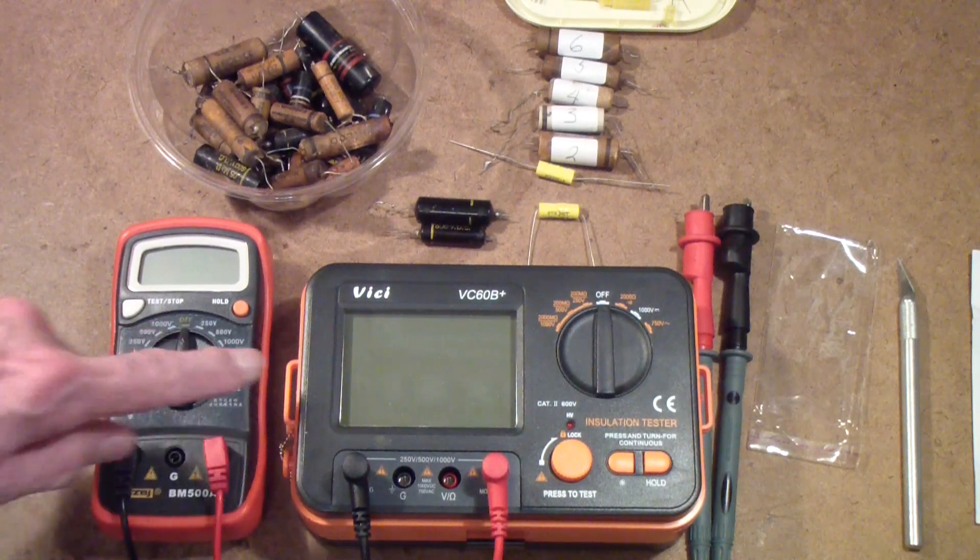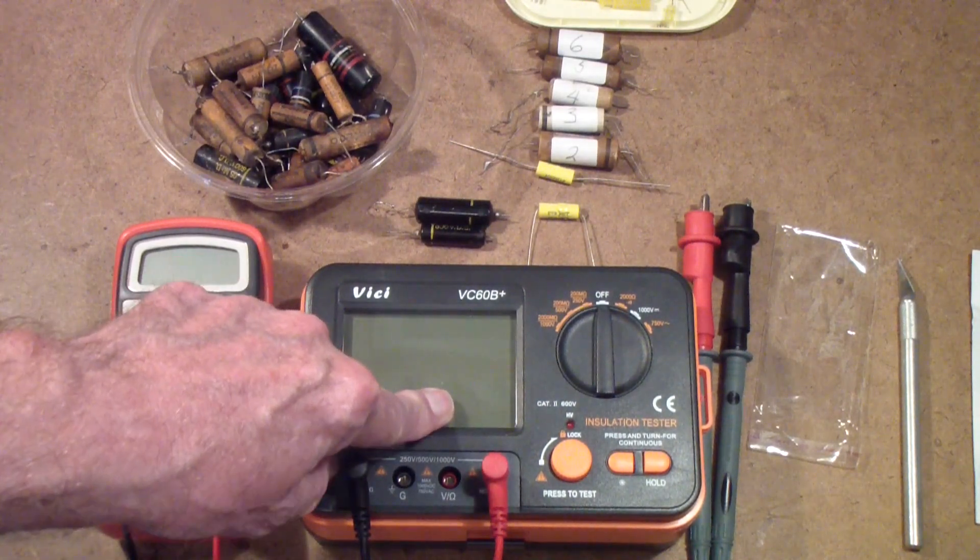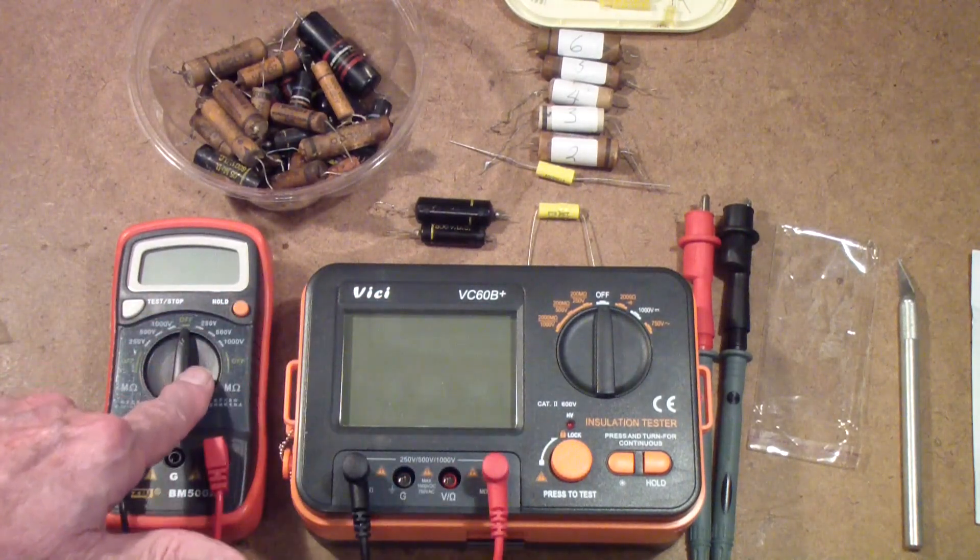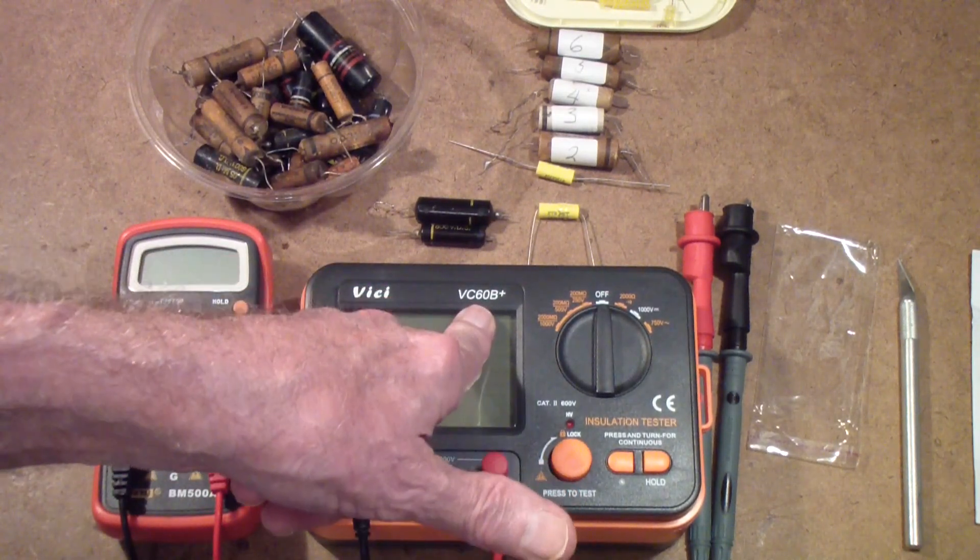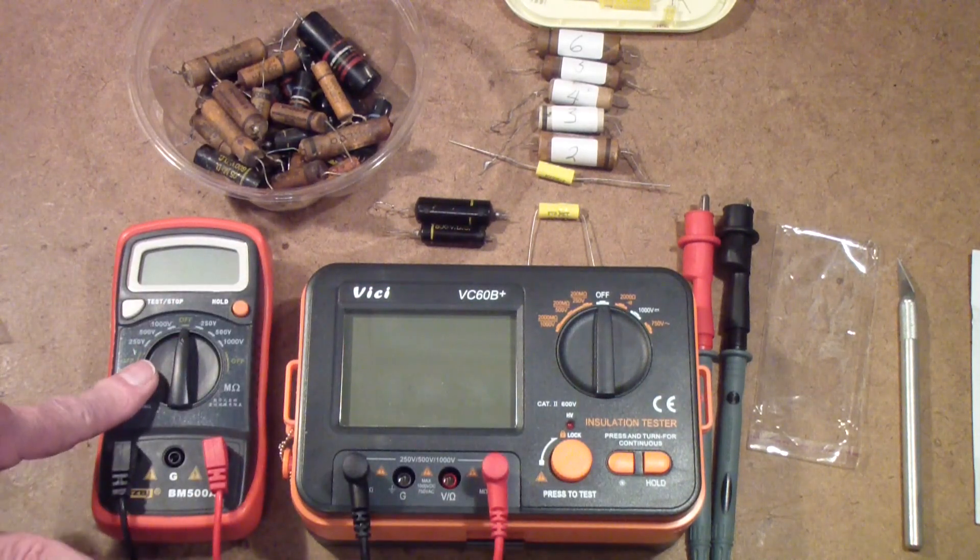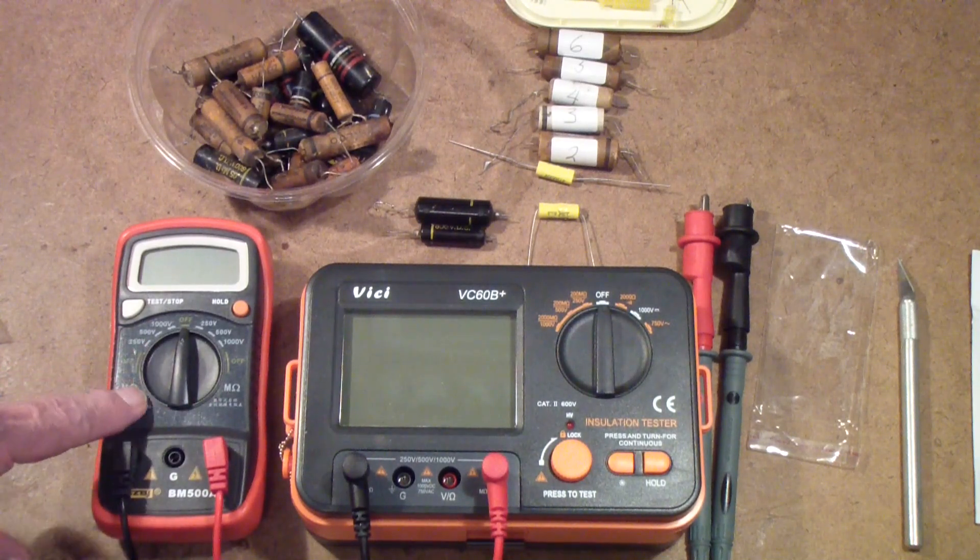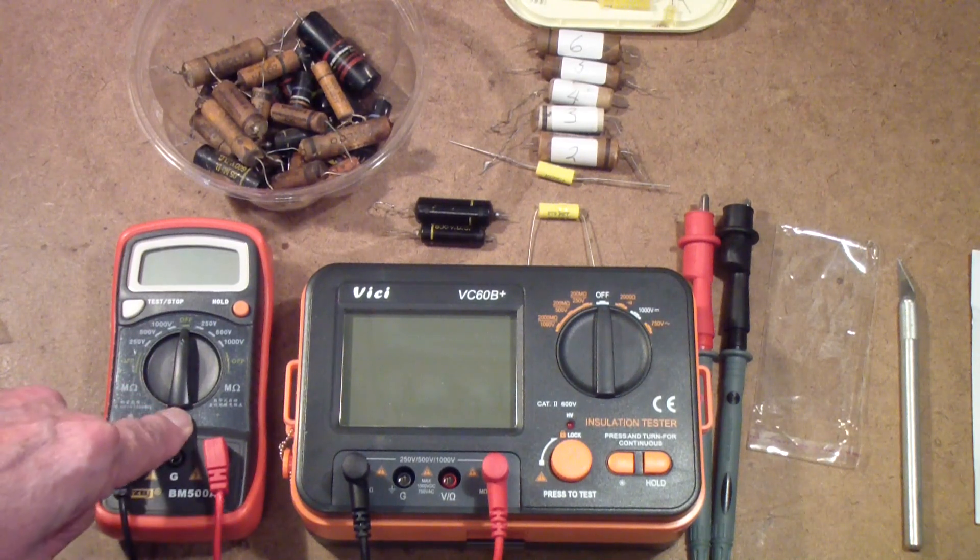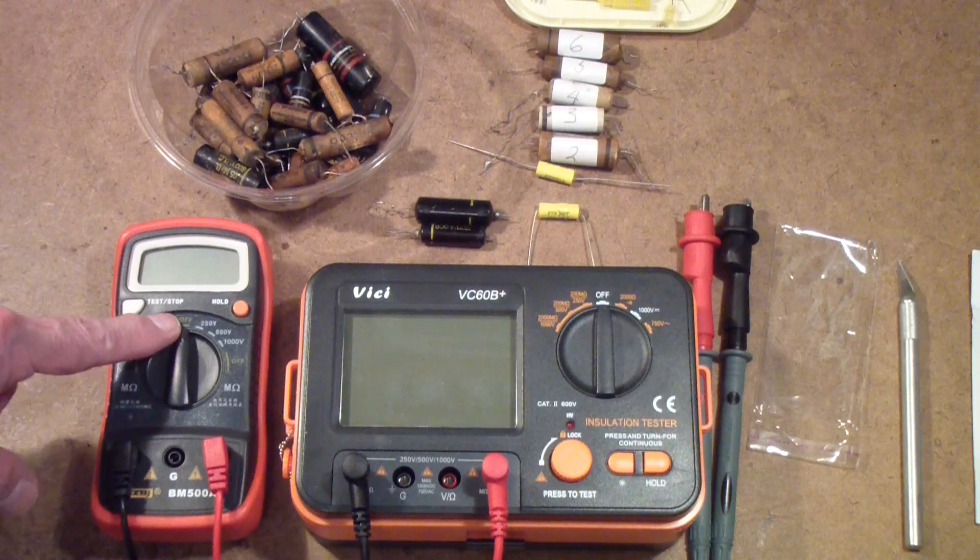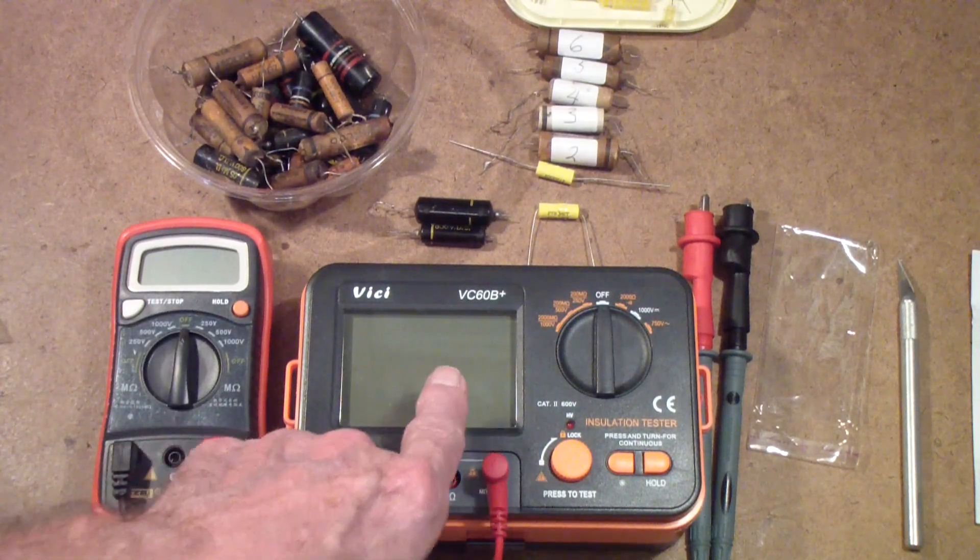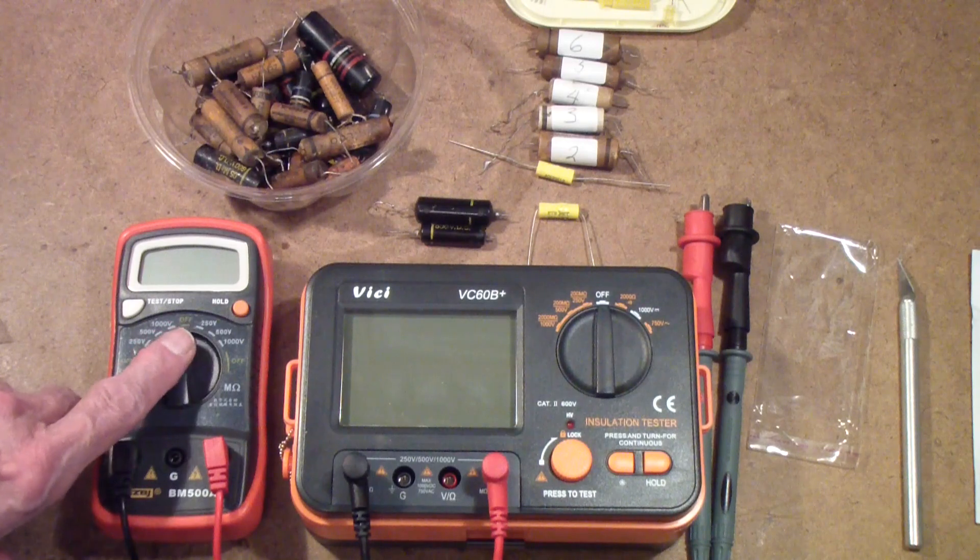Back to these meters - these are megaohm meters. The one on the left is the BM500A, the one on the right is the VC60B+. I bought both of these meters from Amazon. This one from a supplier, so it came right away as do most of their US shipments. But this I bought from an Amazon third-party supplier who promised delivery in 15 to 20 days and it took right at 30 to get here, about 10 days later than their latest promise date.